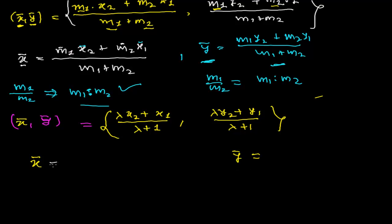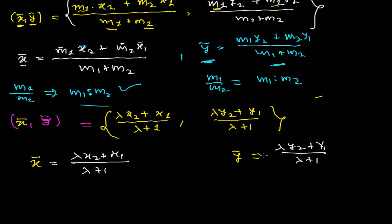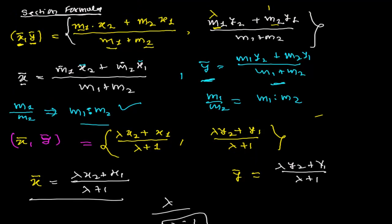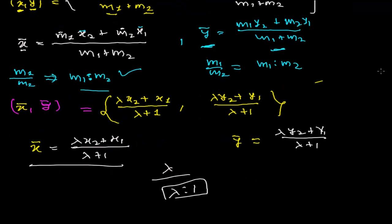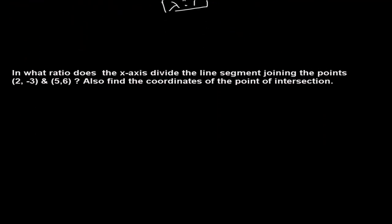Equate either x̄ or ȳ using the lambda formula. Once you find the value of λ, the ratio is simply λ : 1. That's the main advantage — no verification step needed, and it's straightforward. So those are the two methods: the standard section formula and the modernized lambda:1 section formula. Now let's try an example.